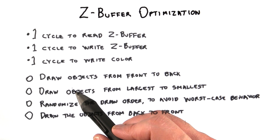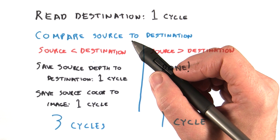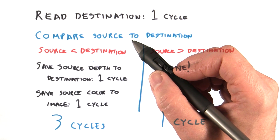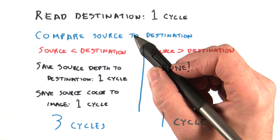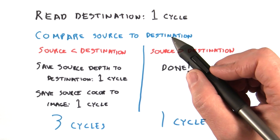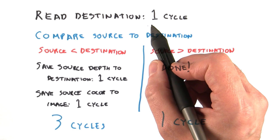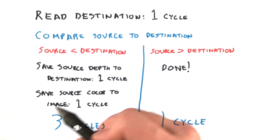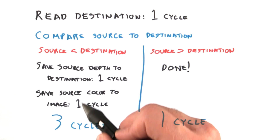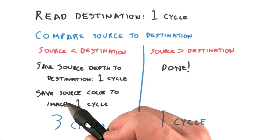The answer depends on how each z-depth comparison goes. When the object is closer than whatever is already in the z-buffer, the cost is three cycles: read the old z-depth value, write the new z-depth value, and then write the new color. We call the new value coming in the source and the old value the destination. When the object is farther away, only one cycle is needed — we always have the cost of reading the destination z-buffer depth. When we compare the source to the destination, we get three cycles due to having to replace the old color with the new color and the old depth with the new depth.